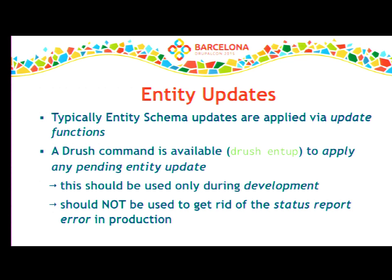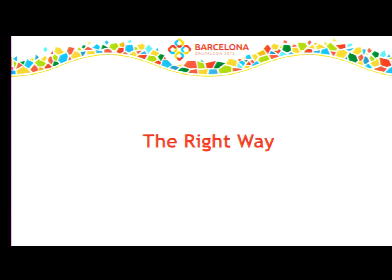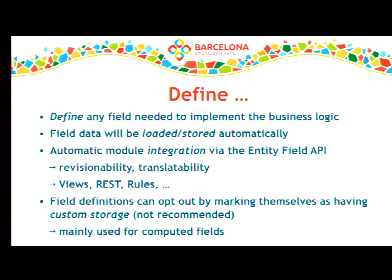Now let's look at the meaty part — the right way, what you should really take away from this session. You need to define your business model through entity type and field definitions. Then all entity field data will be loaded and stored automatically. You'll gain automatic integration with views, REST, rules, and whatever exploits the entity field API correctly. You'll get automatic revisionability and translatability support completely for free, as long as you keep using the core API.